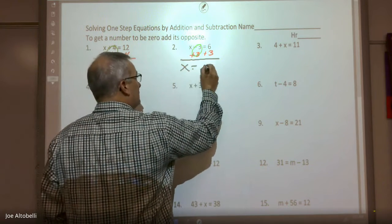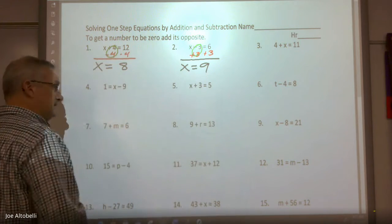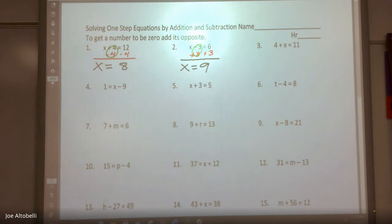And then I get x = 9. Even though number three is written a little differently, you're still asking yourself, what do I have to do so that I get just x by itself?